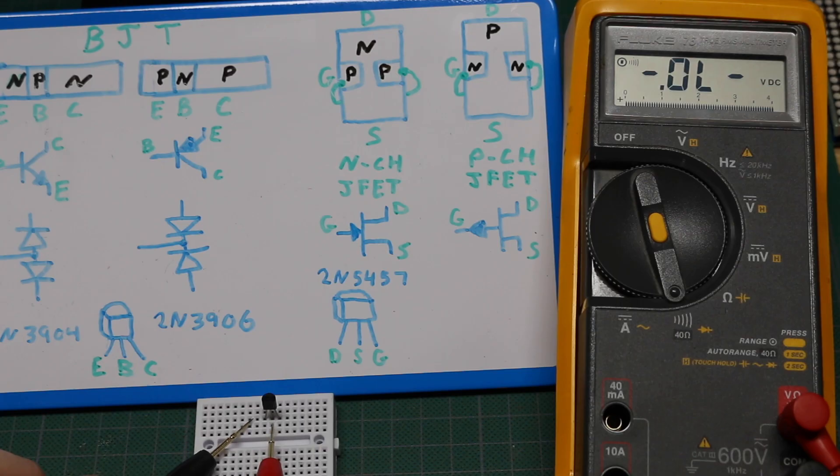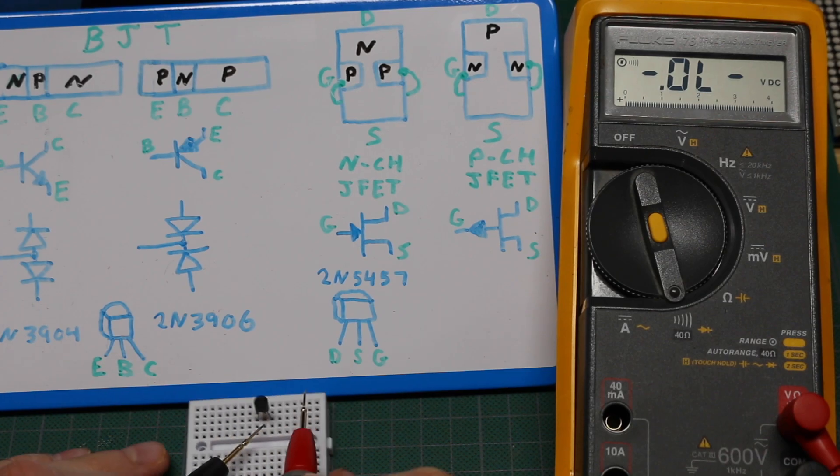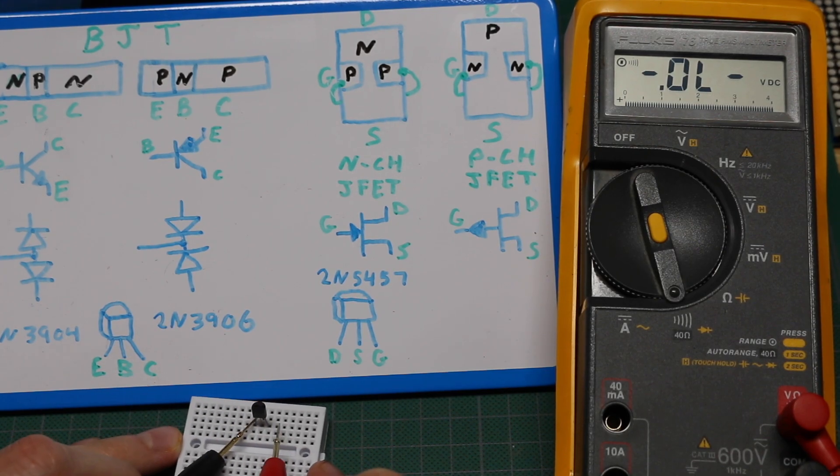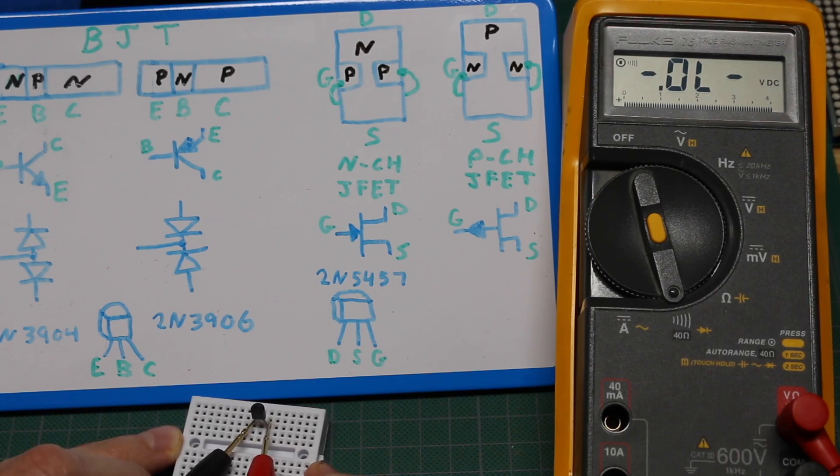So from the first pin to the middle pin, negative and positive, I get nothing showing. I'll keep negative on the first pin and now go to the last pin. I still have nothing.